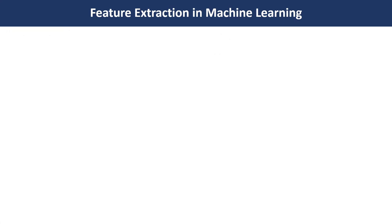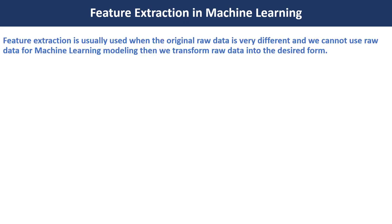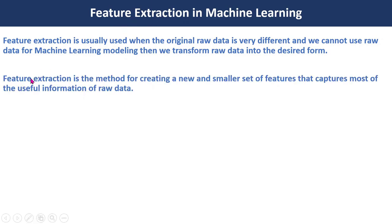Today we are going to discuss feature abstraction in machine learning. First we will understand why feature abstraction is required. Feature abstraction is usually used when the original raw data is very different and we cannot use this raw data for our machine learning modeling. Feature abstraction is the method for creating new or a smaller set of features that capture most of the useful information from that raw data.